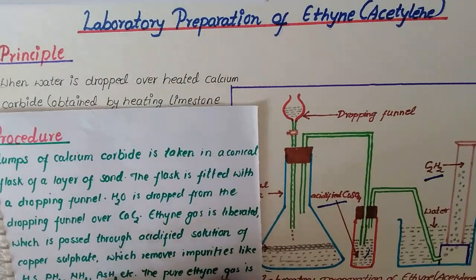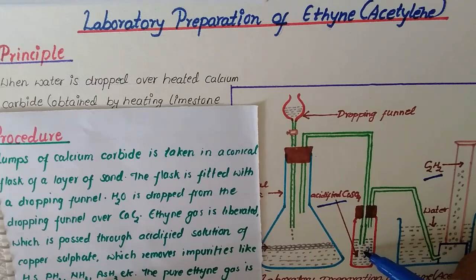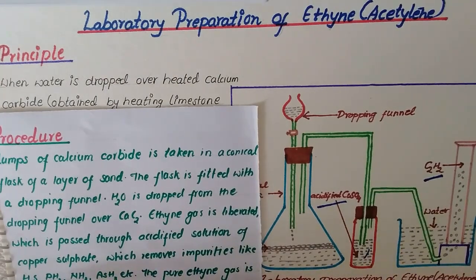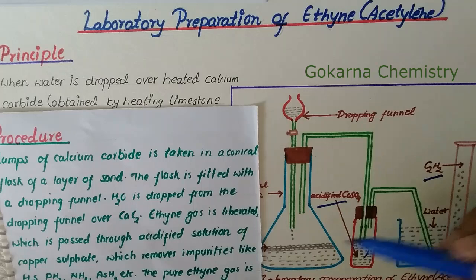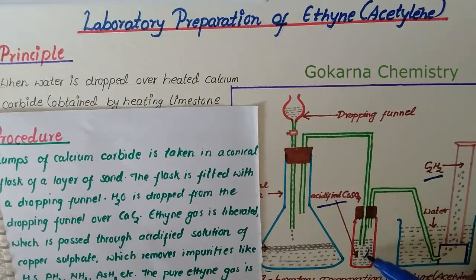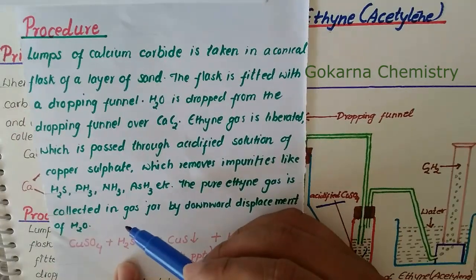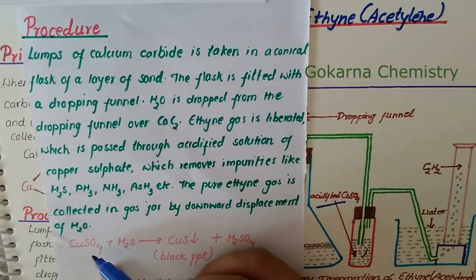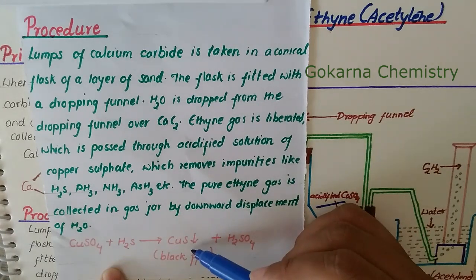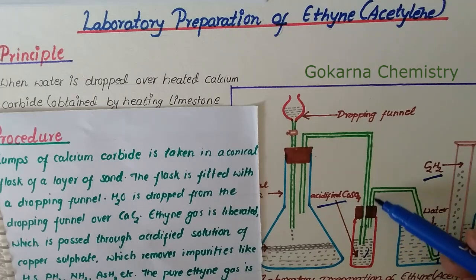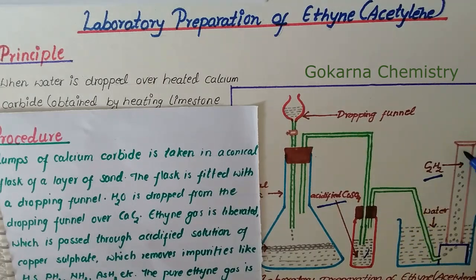Water is dropped from the dropping funnel over calcium carbide, and ethyne gas is liberated. The gas is passed through an acidified solution of copper sulfate, which removes impurities like hydrogen sulfide, phosphine, ammonia, and arsine. These impurities react with the acidified copper sulfate and give a black precipitate, while ethyne passes through.